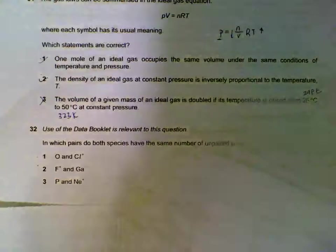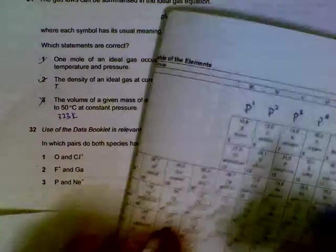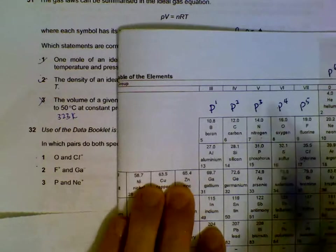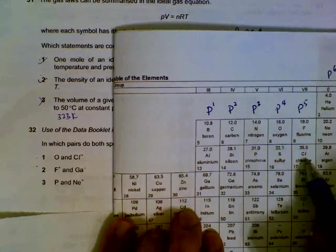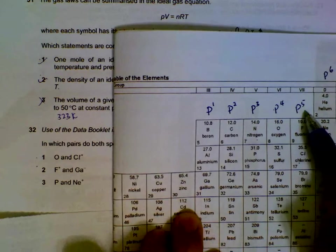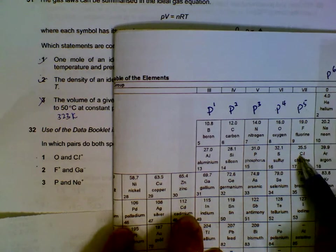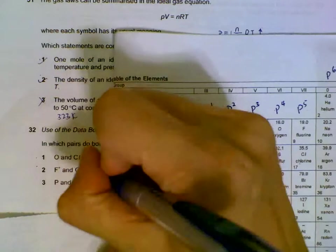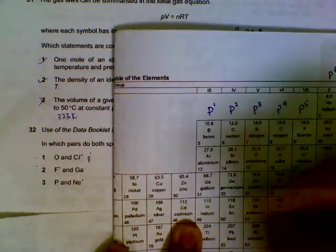So if we have oxygen, for example O, it means that it must end with a P4 configuration. What about Cl+? Cl starts with P5, but since it's a plus, it means it loses one electron—it goes one step back to P4. So Cl+ actually is P4. We have P4 for oxygen and Cl will be P4 also.